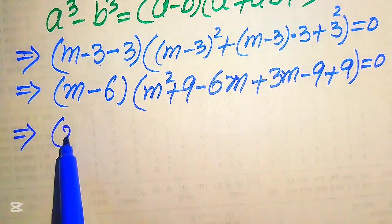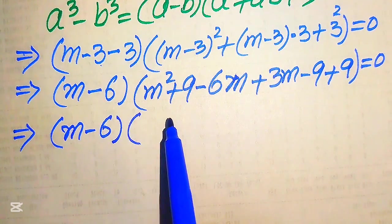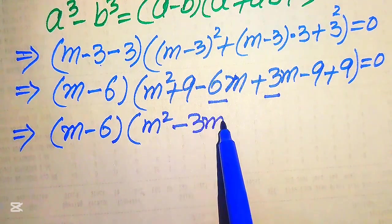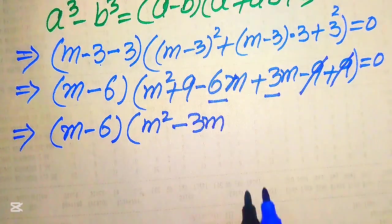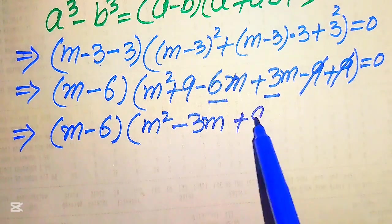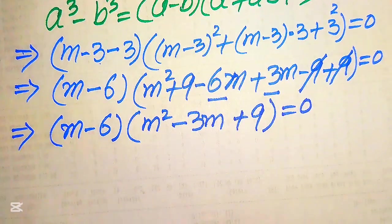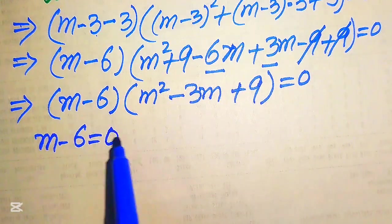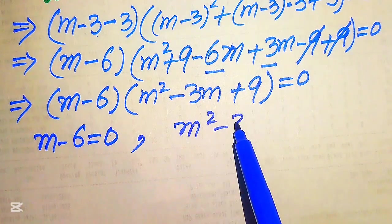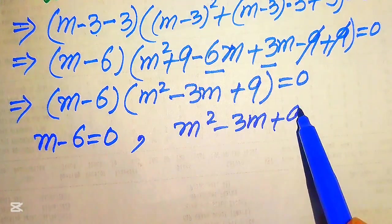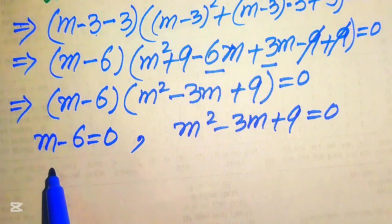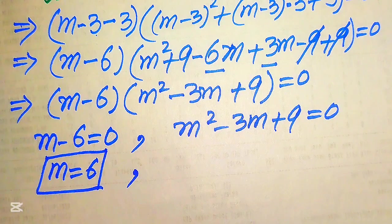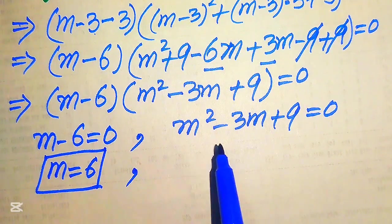After simplification, combining like terms: −6m + 3m gives −3m, and 9 − 9 + 9 = 9, giving us (m minus 6)(m² − 3m + 9) = 0. We divide into two cases: Case 1 gives m minus 6 = 0, so m = 6, which is the first real solution. Case 2 gives the quadratic m² − 3m + 9 = 0, which we solve for the remaining roots.